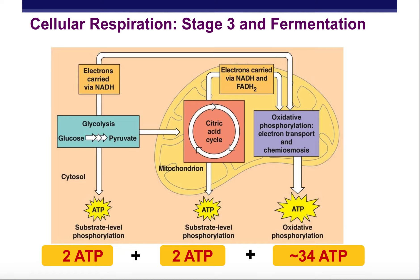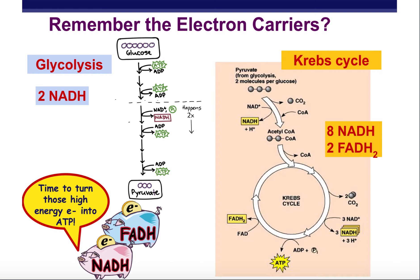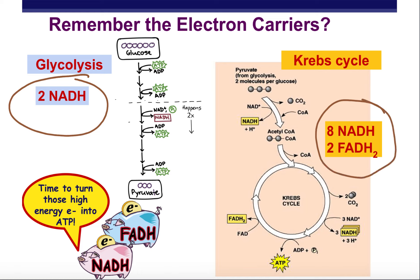A reminder: when it comes to the energy we get from cellular respiration, the key lies in the final stage, which is going to convert all the setup we did in the first two stages into ATP. This process is all about the electron carriers we built in the first two stages — the NADH from glycolysis, the NADH and FADH from the Krebs cycle, as well as the NADH from acetyl-CoA formation, also known as pyruvate oxidation.